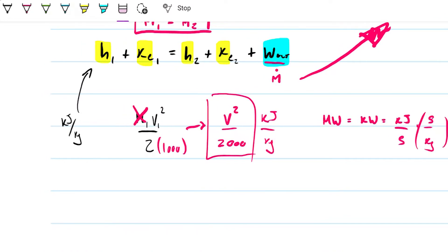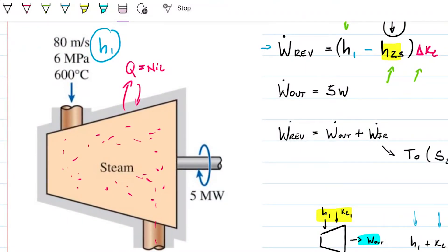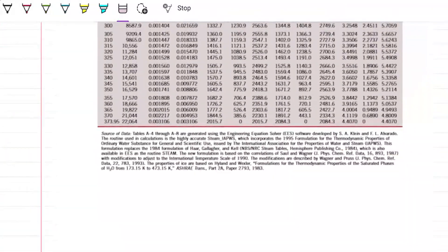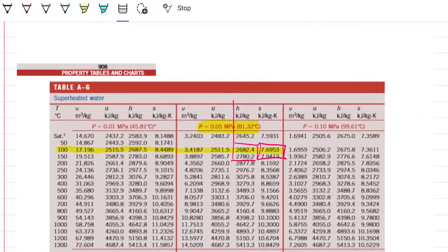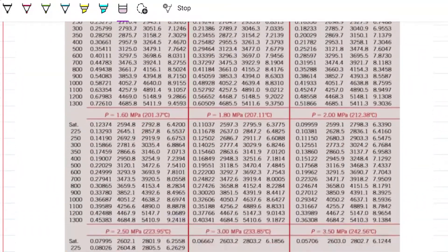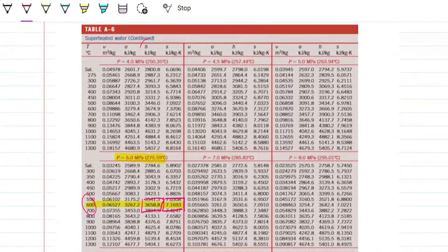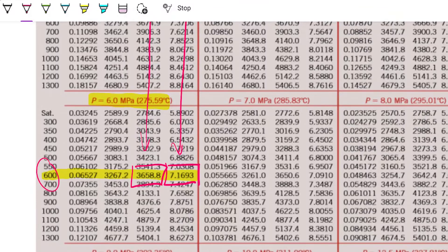So first state is six megapascals and 600 degrees Celsius, six megapascals and 600 degrees Celsius. Superheated. Six megapascals. Here we go. Six megapascals, 600 degrees Celsius. All good. And I'm grabbing this entropy and the entropy. So these are the two values that I'm interested in. The 3658.8 kilojoules per kilogram and the 7.1693. All right.